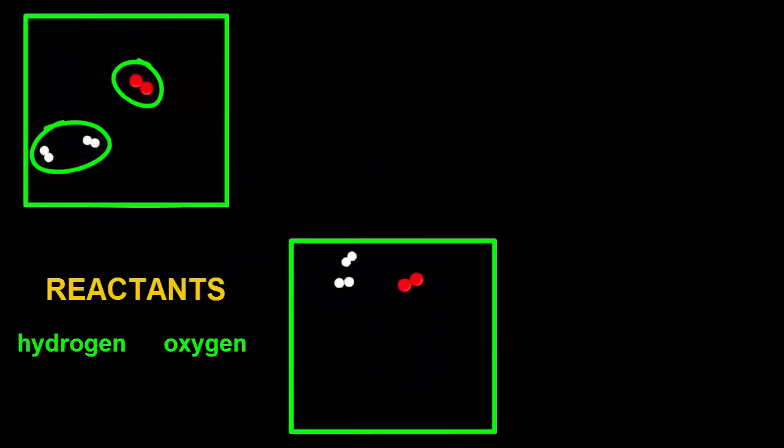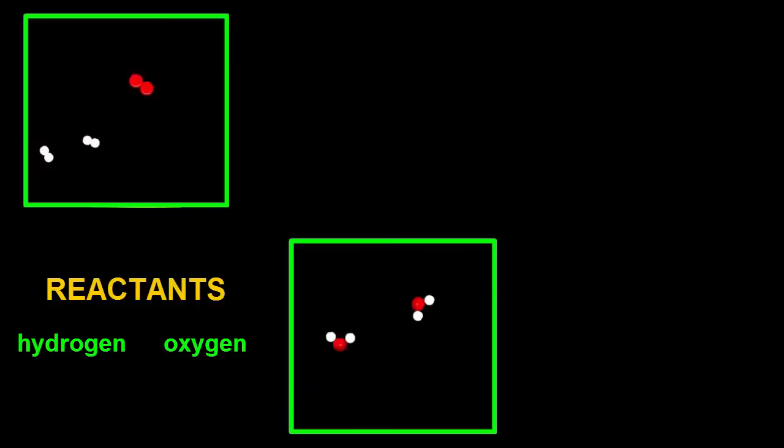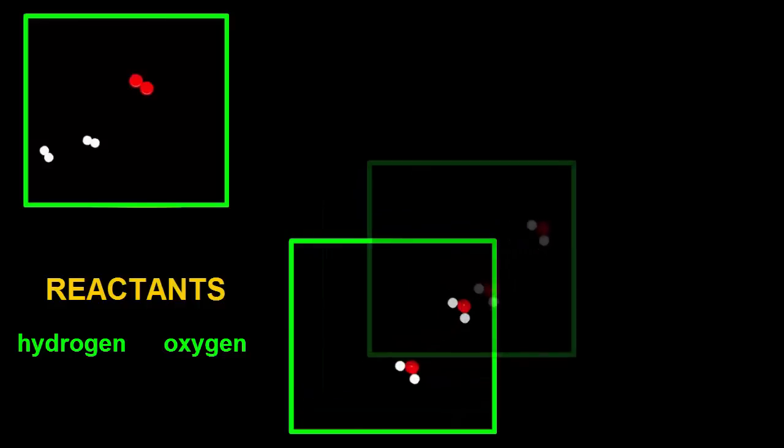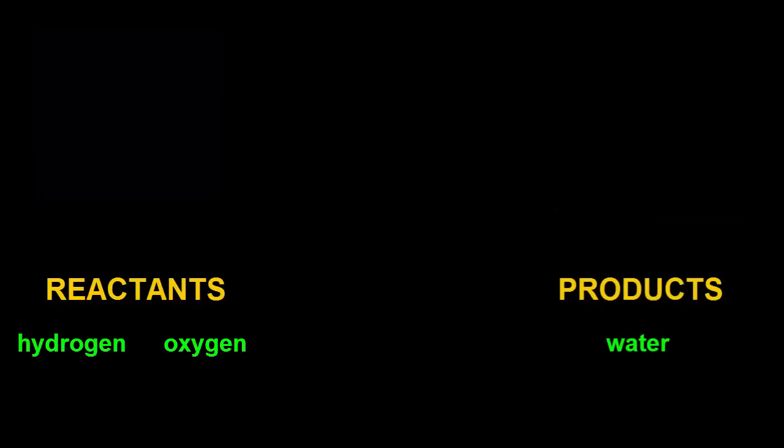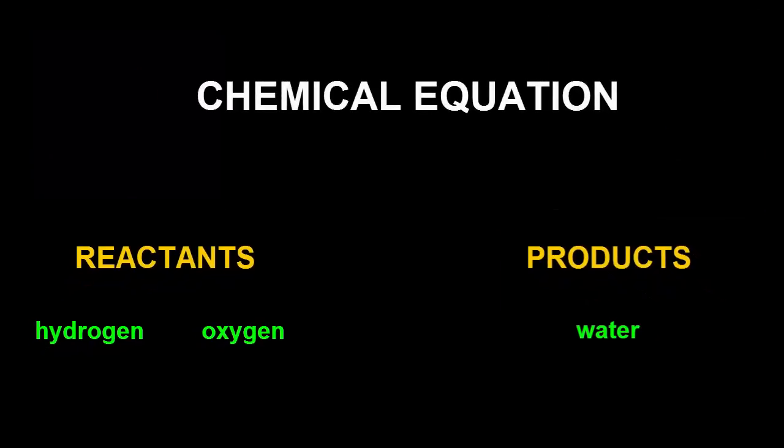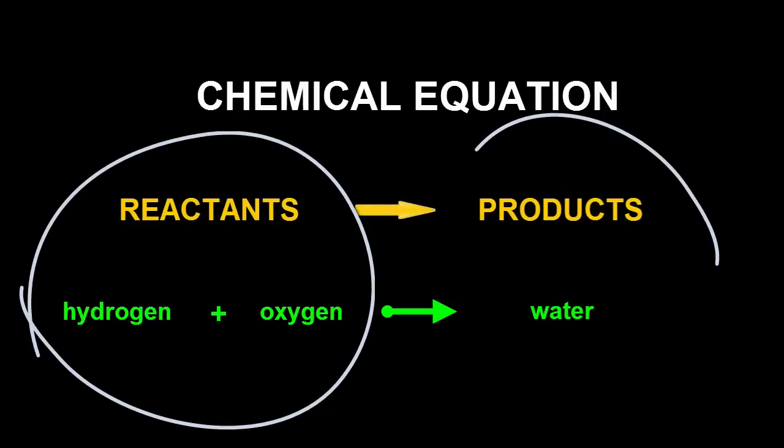In a previous video we saw the different stages of a chemical reaction. At the beginning were the reactants, hydrogen and oxygen molecules. And at the end were the products, water molecules. A chemical equation shows the substances before and after the reaction on either side of an arrow. The reactants to the left and the products to the right.